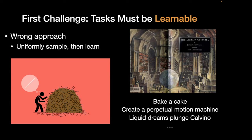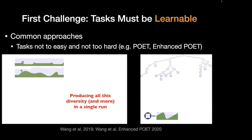Imagine if your task space were all tasks that could be described in natural language — inside the giant library of Babel of tasks, all tasks exist. One task could be 'bake a cake,' which might be reasonable for the agent. Another might be 'learn Calc 3,' which is not appropriate if the agent doesn't yet know algebra or trigonometry. Even worse, you might have 'create a perpetual motion machine,' which is impossible. So we can't just sample tasks randomly.